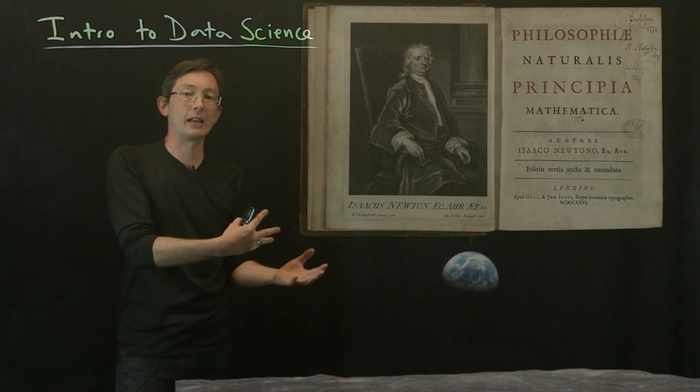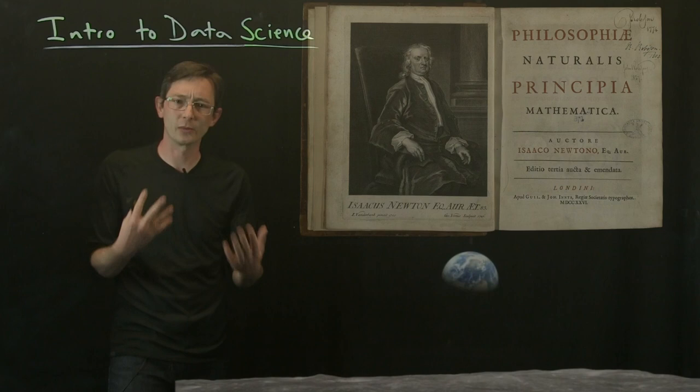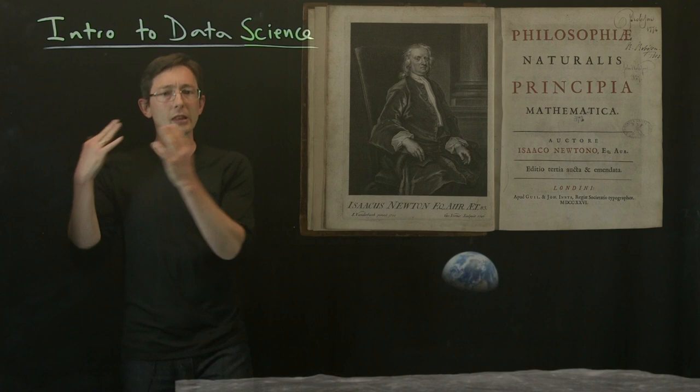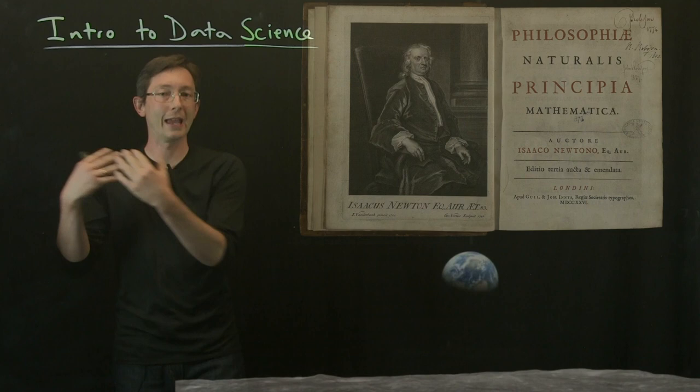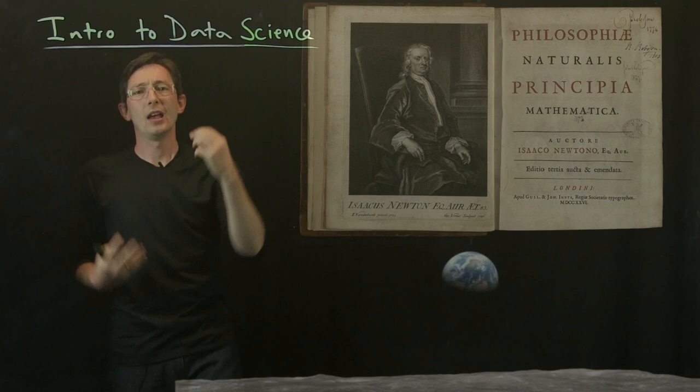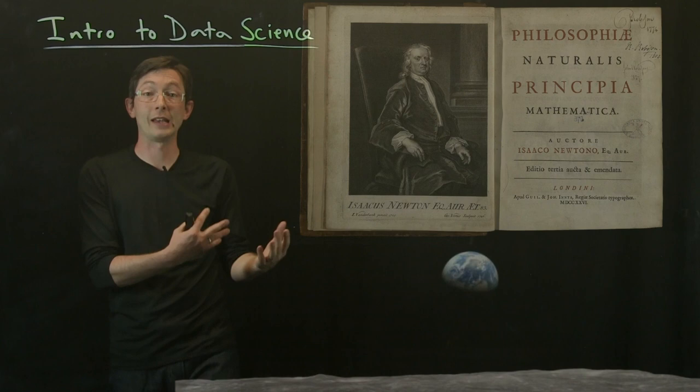His theory truly generalized. F equals MA generalized in a way that allowed us to land people on the moon, which is really a huge achievement. We talk about this a lot. A lot of machine learning algorithms today, most of them I would say, do what Kepler did. They describe the world as we observe it, as the data describes it. It takes this epiphany, this great leap to get a model that truly generalizes like what Newton did.